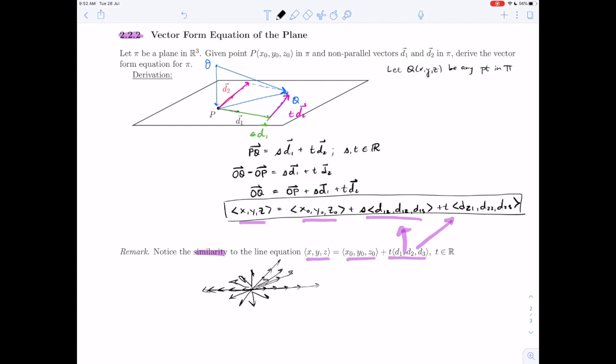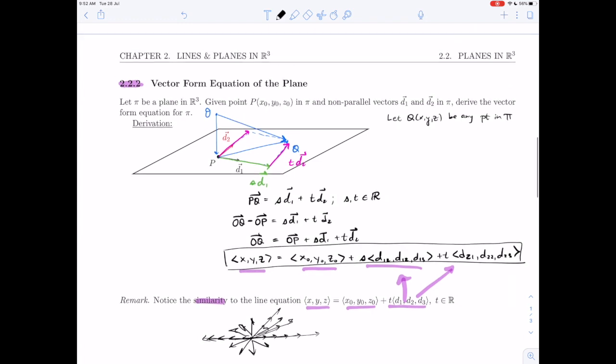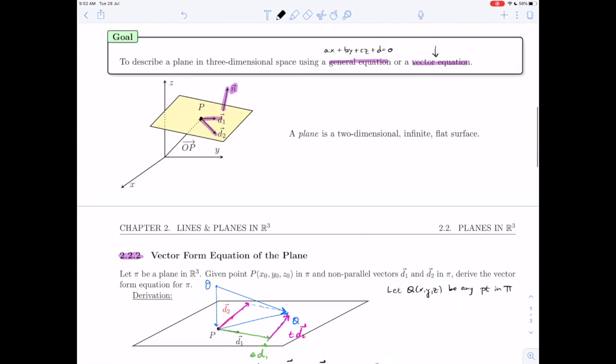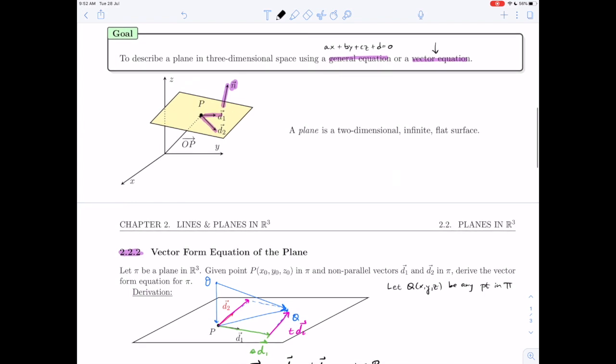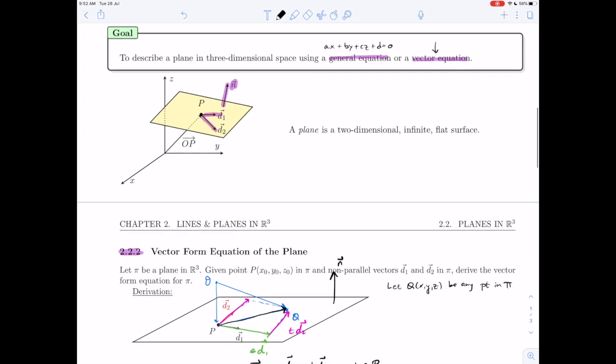Secondly, I want to point out the difference. The normal form equation that we used before, ax plus by plus cz plus d equals zero, relied on the fact that we had a vector perpendicular, and our vector pq here was perpendicular to the normal vector. We had that relationship: pq was perpendicular to the normal vector.